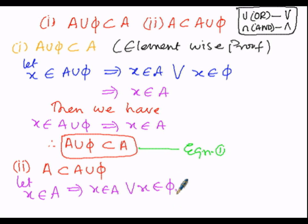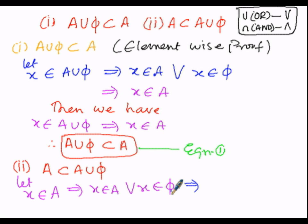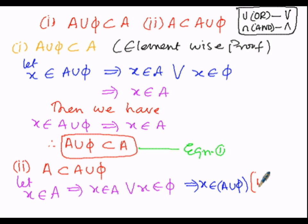X belongs to A, and since the empty set has no elements, we write X belongs to A, which we can also write as X belongs to A or X belongs to φ. By the definition of the union of two sets, X belongs to A or φ can be written as X belongs to A union φ.